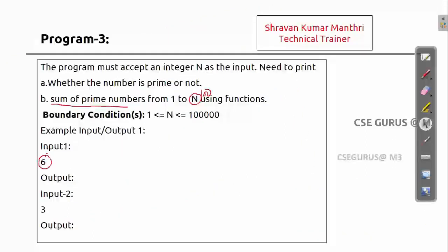For the first question, if I give 6, the output should print either yes or no. Six is not a prime, so you print no. If I give 3, you print yes. For the second question, if n is 10, the prime numbers are 2, 3, 5, 7 only, so the sum is 17.